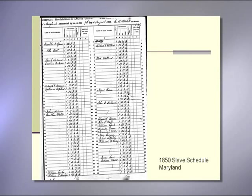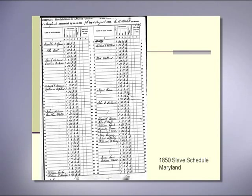This is a slave schedule for Maryland in 1850. The slave schedules rarely give the name of the slave — they usually give the name of the slave owner or the person working with the slave. If you knew your family member had been owned by Mrs. Pierce, there are only four slaves listed here. But some slave schedules go on for page after page. Jefferson Davis in Mississippi has many pages of slaves, and it would be almost impossible to determine if your ancestor was a slave for Jefferson Davis using these records.